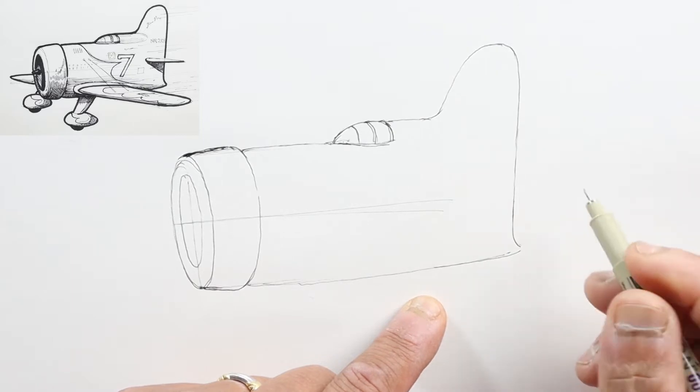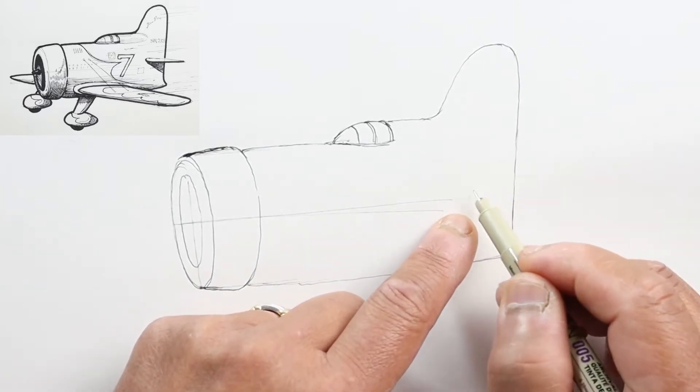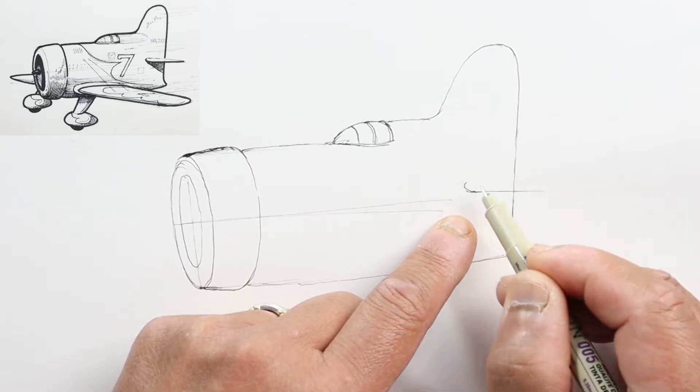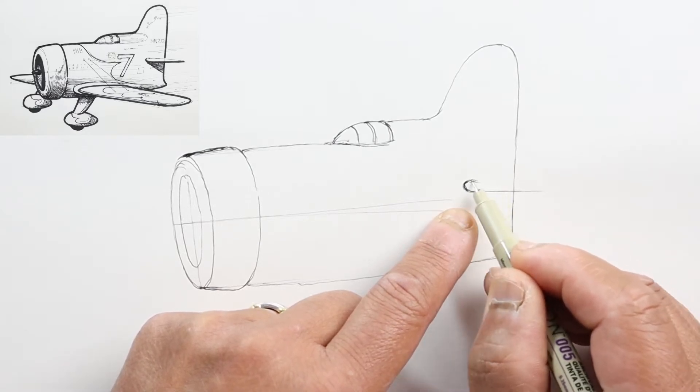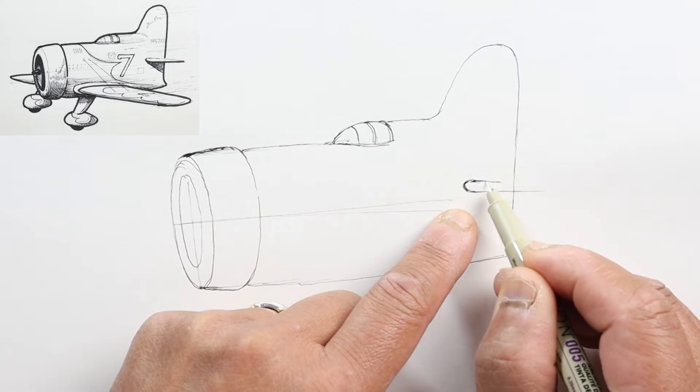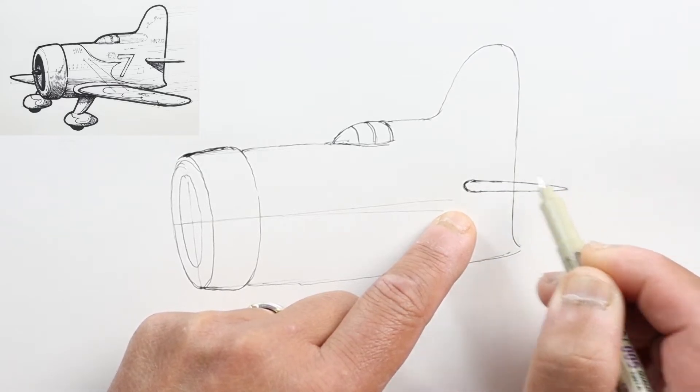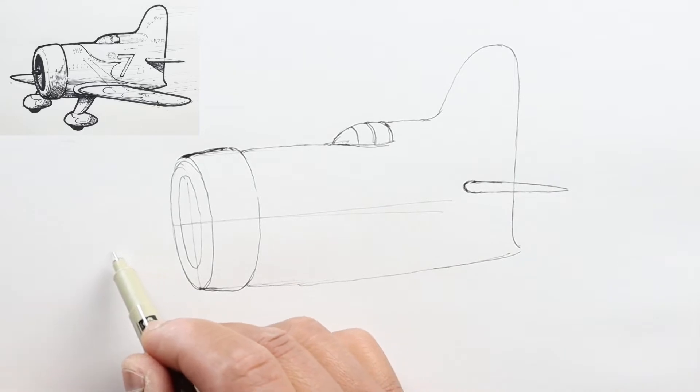Right about halfway here will be the tail wing, so curve the front section, go across, and taper to a point. Now we have to draw the wing, so we'll indicate what direction the wings will go, kind of like this.